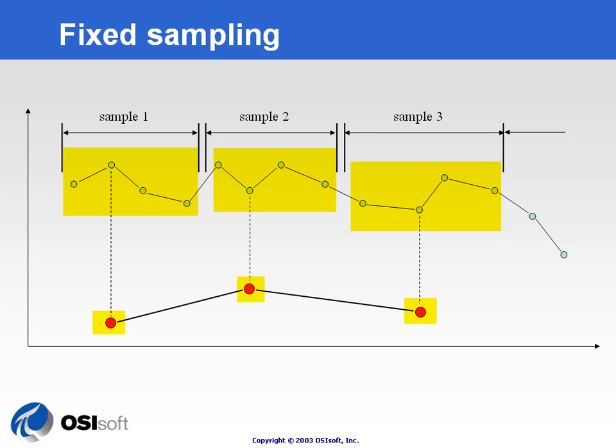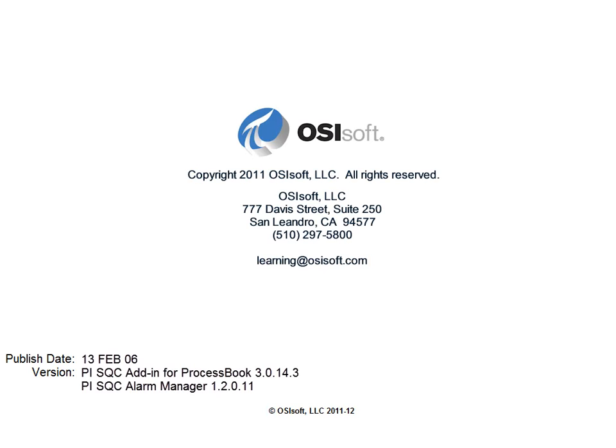We will differentiate between fixed sampling, where you must complete a sample before getting data for the next sample, and moving sampling, where you reuse part of the initial observations across multiple samples.